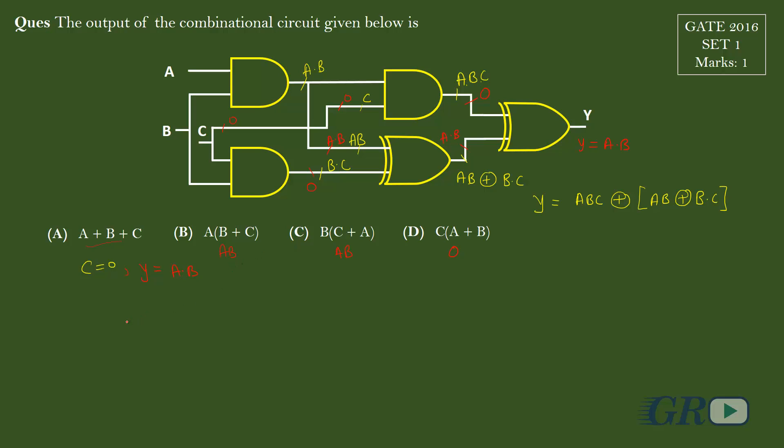Continuing this way, if I put A equals to zero, A is zero, then the output here will be zero, here I will get zero, here I will get B dot C, here C, then here zero and B dot C XOR with zero again, then B dot C, and B dot C XOR with zero, Y will be B dot C. So with A equals to zero, Y is B dot C.